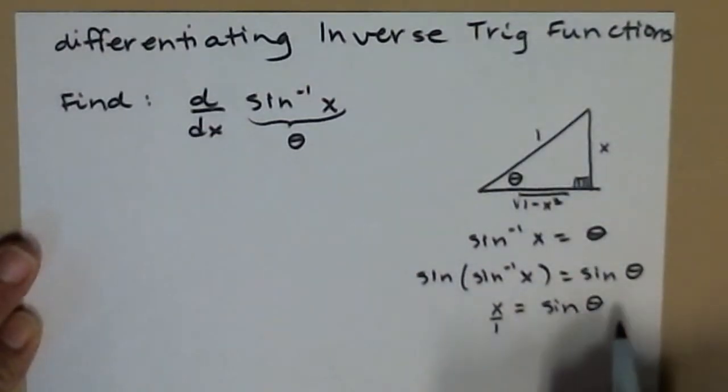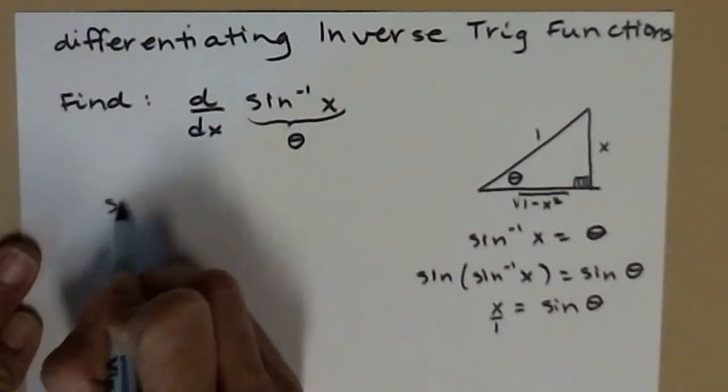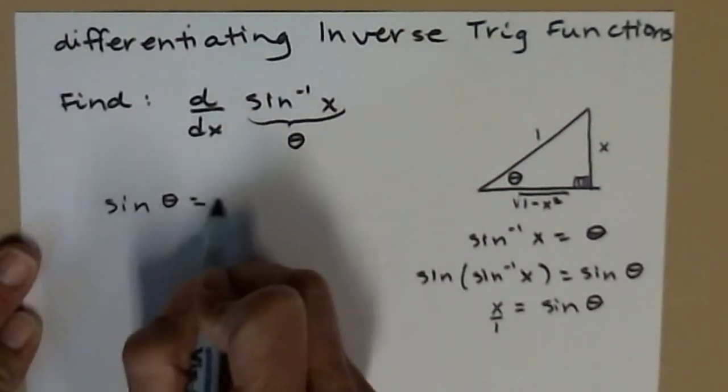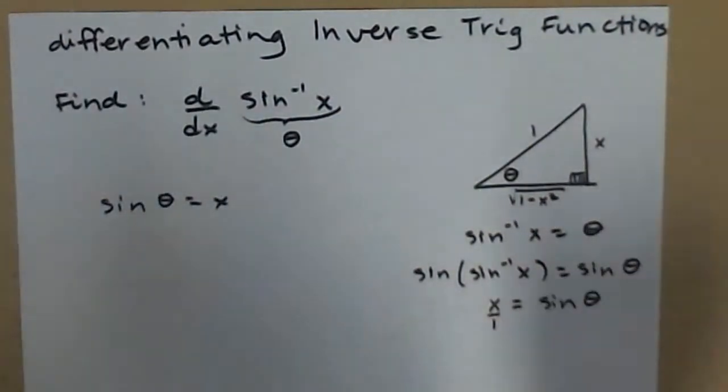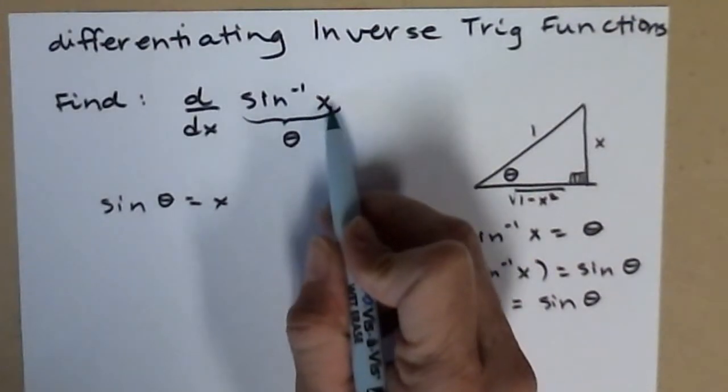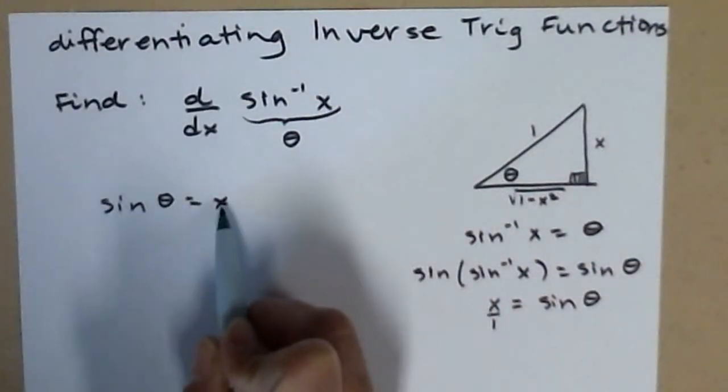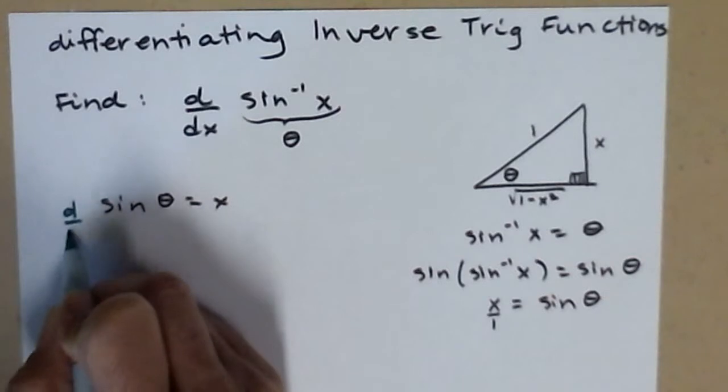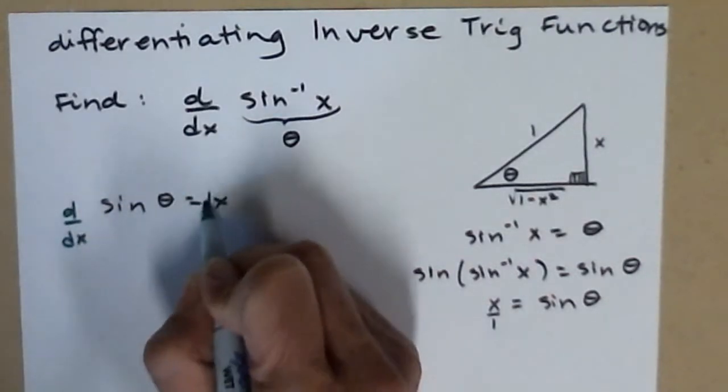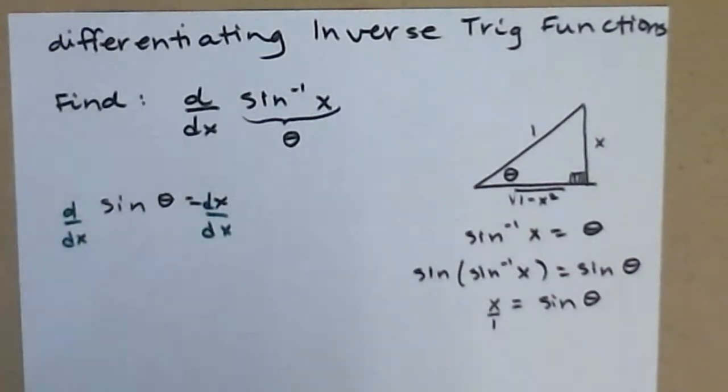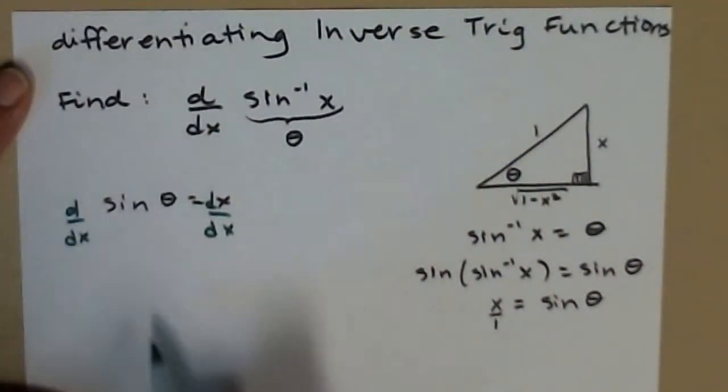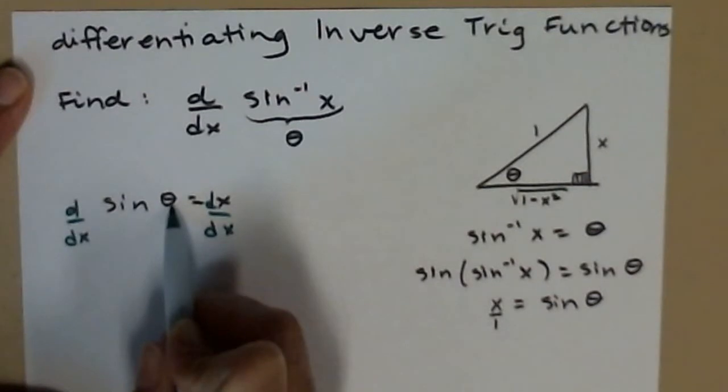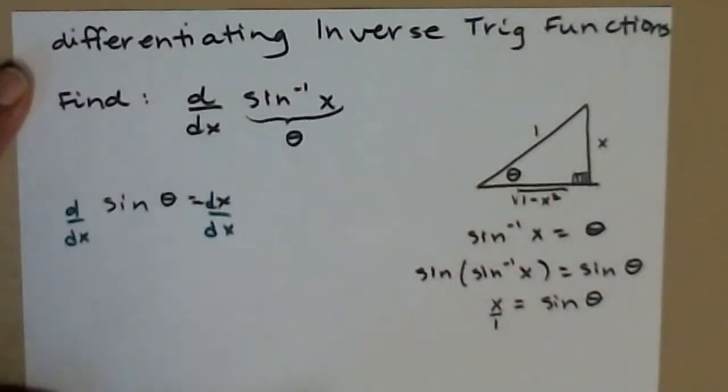I have my three sides labeled. So now I'm going to write this sine of theta equals x, and this is what I'm going to come in and differentiate. Write theta depends on x and I have the sine of theta equals x, so I'm going to differentiate each side with respect to x.